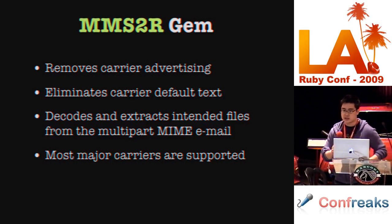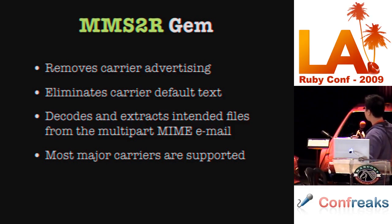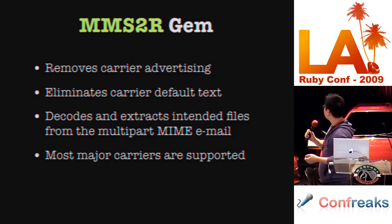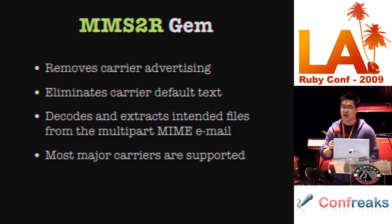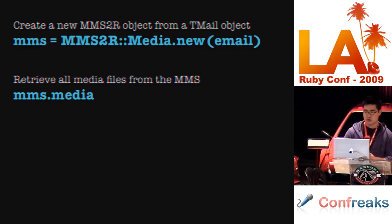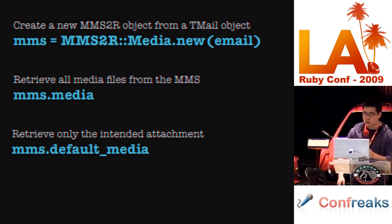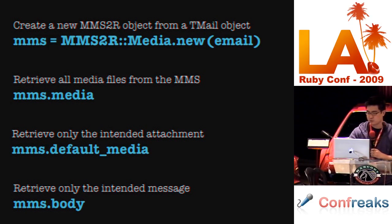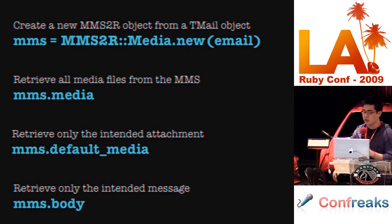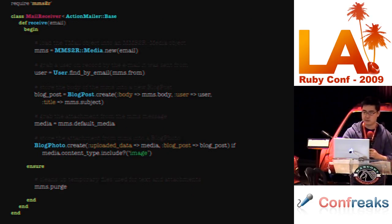One gem I really like is MMS2R. It removes carrier advertising and default text, decodes and extracts media files from multipart MIME emails, and many carriers are supported. The really cool thing MMS2R can do is actually retrieve the intended attachment the user wanted to send — in this example, that would be the cat photo. And for the message body, instead of a messed-up body with carrier junk, you'll actually get the intended body. It's really, really helpful.